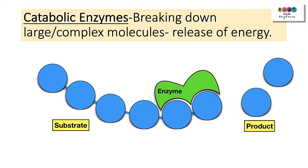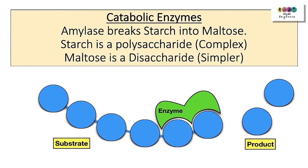Catabolic reactions are metabolic reactions in which large complex molecules are broken down into smaller, simpler molecules with the release of energy. There are catabolic enzymes specific to these reactions. An example would be amylase, which breaks down starch — a large complex polysaccharide — into maltose, a simpler disaccharide.